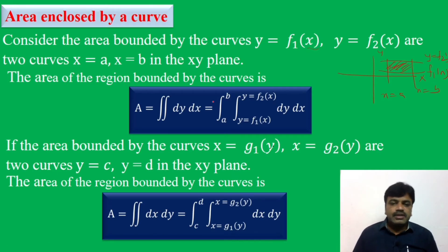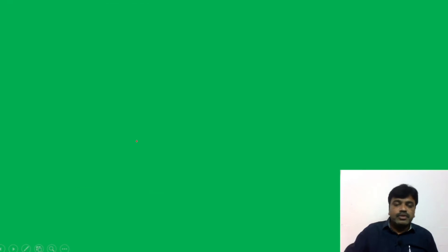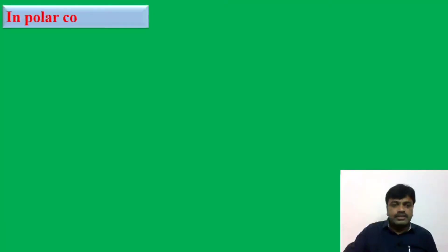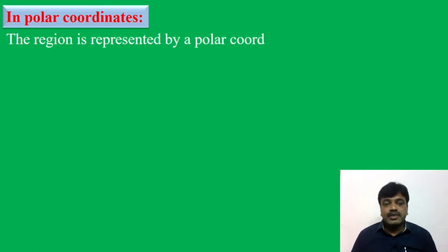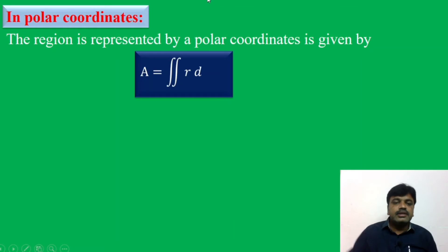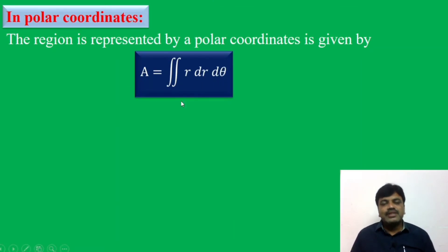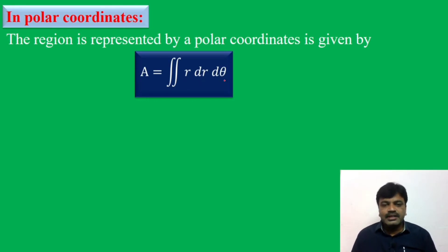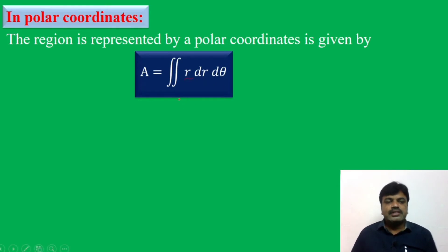This is the Cartesian form. There may also be a polar form. In polar coordinates, the area formula is A equals the double integral r dr dθ. In Cartesian form we use dx dy, while in polar form the extra term is r, giving r dr dθ. This concludes the concept of area enclosed by curves.